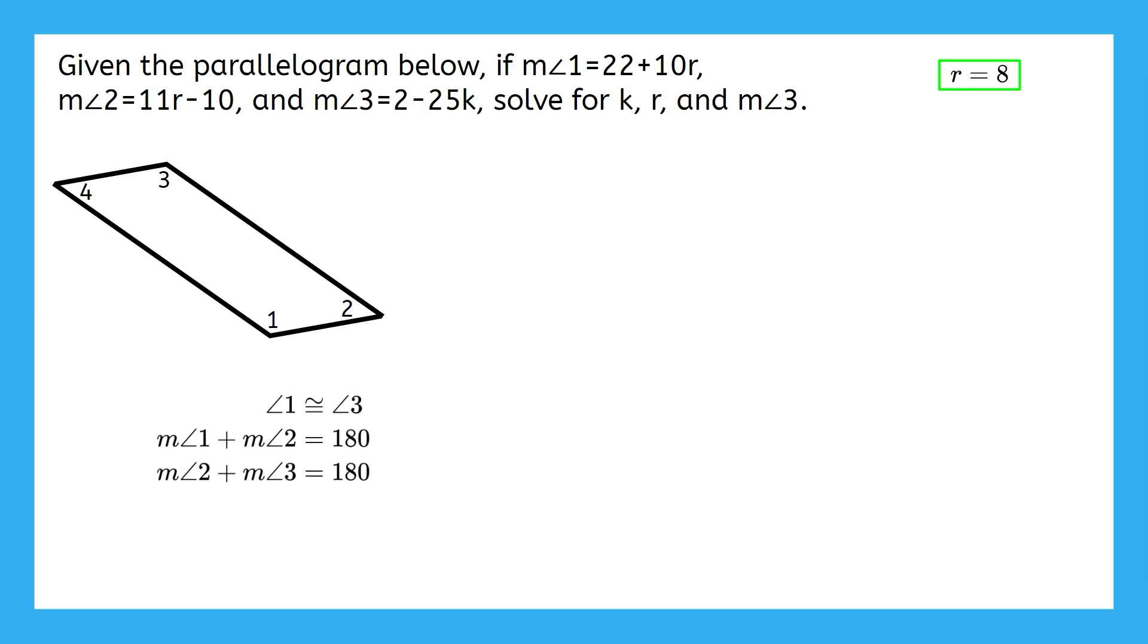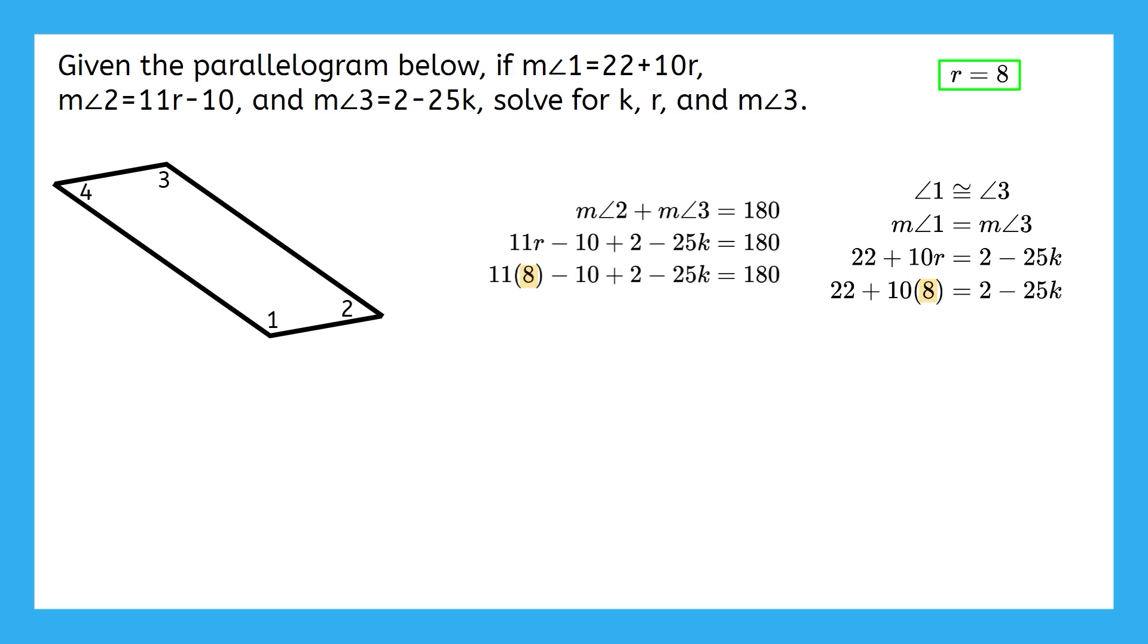Next, we still have to solve for K and find the measure of angle 3. So let's take a look back at the three relationships we have. We already used this middle one, so we can cross that off. That leaves us with two more relationships that we can use. Angle 1 is congruent to angle 3, and angles 2 and 3 are supplementary. But remember, we avoided these originally because in each of them my equation will have two variables. I can't solve a single equation that has two variables in it. But now I've already figured out that R is 8, so I can get rid of one variable. I can now solve for K in either of these equations. It's really just a matter of your personal preference as to which one you want to use. I'm going to use this one.